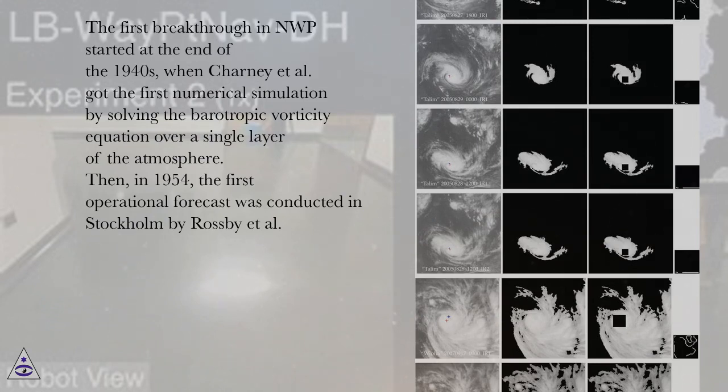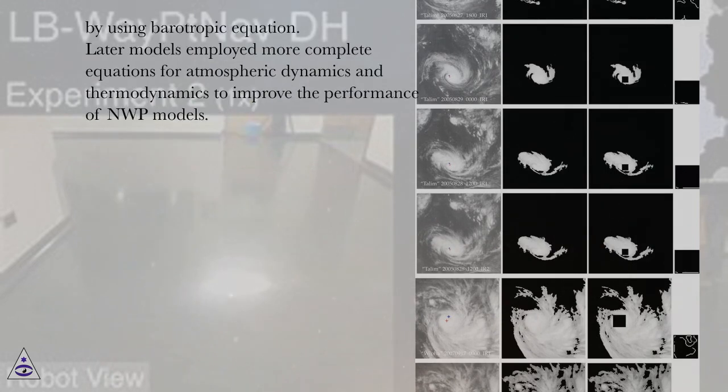Then, in 1954, the first operational forecast was conducted in Stockholm by Rossby et al. by using barotropic equation. Later models employed more complete equations for atmospheric dynamics and thermodynamics to improve the performance of NWP models.